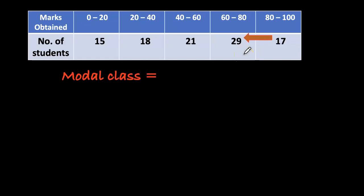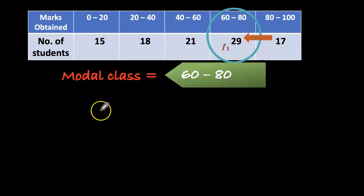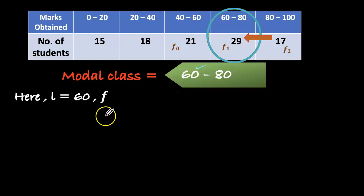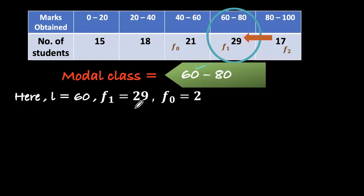The first step is to go through the frequencies and find the highest value. The highest frequency is 29, so the modal class is 60 to 80. Therefore, f1 is 29, f0 is 21, and f2 is 17.